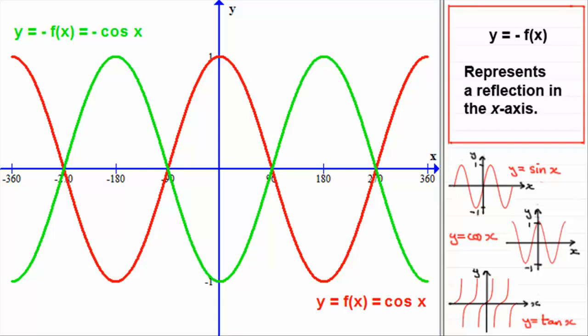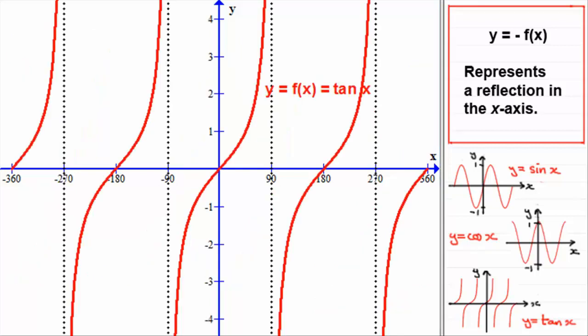Well, we have one more to do, and that would be the graph of y equals tan x. So here's the graph of y equals tan x, f of x being tan x, and we've got the asymptotes drawn in where the graph approaches these lines. These lines are minus 270, minus 90, 90, and 270 degrees. And you should be familiar with this graph anyway.